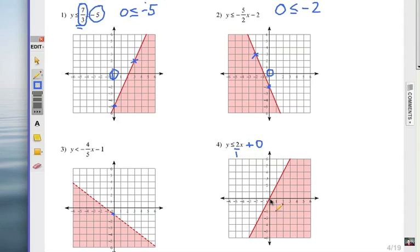Now you can't test the origin because it's on the line. So test something else. Let's test if x is one and y is one. Notice that that would be that point right there. So when I test it, if it's true, I shade on that side of the line. If y is one, I put it in there, y is less than or equal to 2x, which is two times one. Is one less than or equal to positive two? Since that's true, we shade on that side of the line.